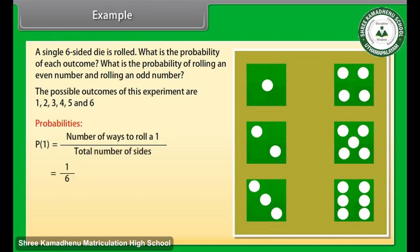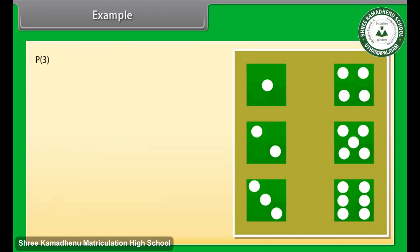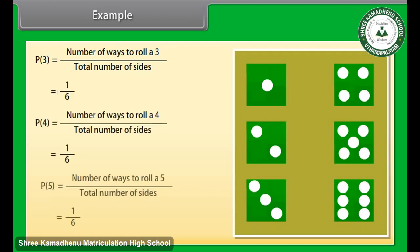Probability of 2 is number of ways to roll a 2 by total number of sides, which is equal to 1 by 6. Similarly, the probability of 3 is number of ways to roll a 3 by total number of sides, which is equal to 1 by 6. In the same way, we will find the probabilities of 4, 5, and 6.